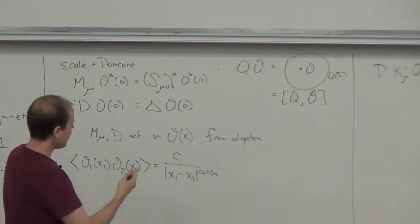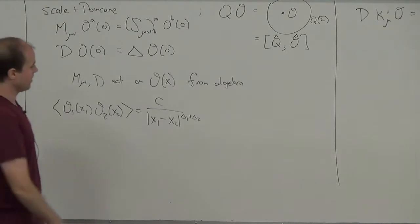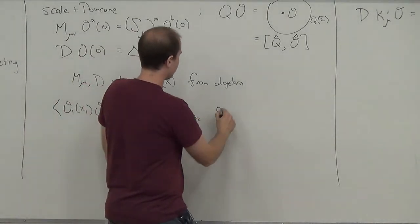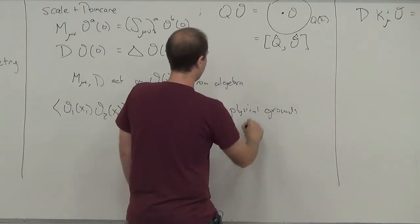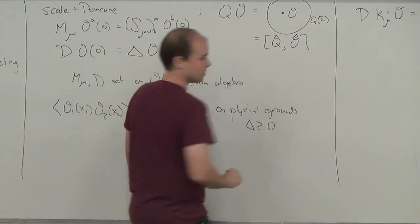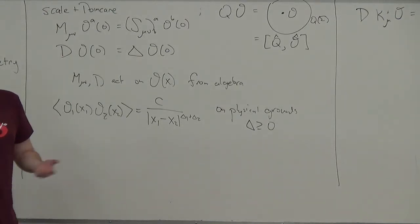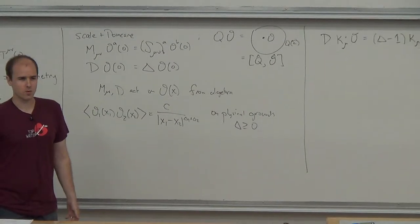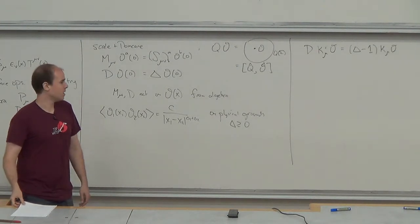Looking at the two-point function formula, it's some power law so that as we move the two operators apart, the two-point function dies off with power delta_1 plus delta_2. On physical grounds, these deltas should be non-negative. If the deltas were negative, we would have two-point functions that grow with separation, which is very unusual — we definitely expect correlations to die off as operators move apart.